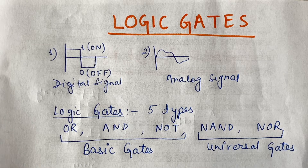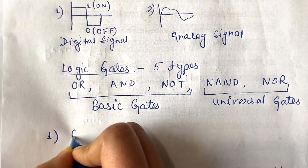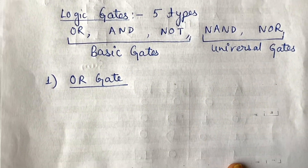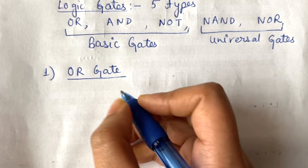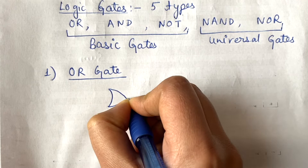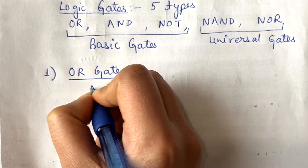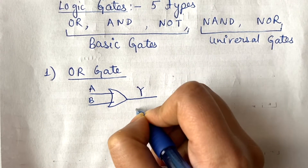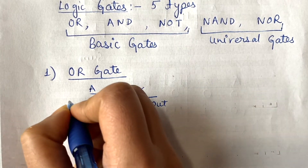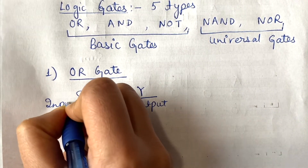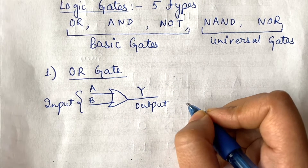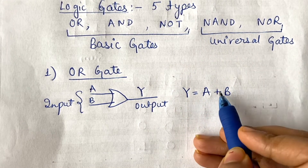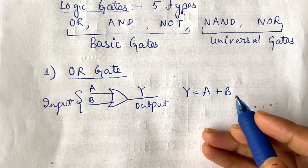Now we will see them one by one. Number one: the OR gate. The symbol for the OR gate has two inputs and one output. The equation for the OR gate is A plus B — the OR gate basically performs addition.